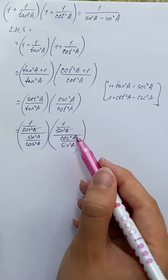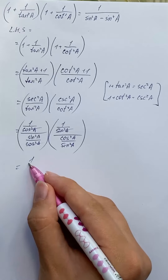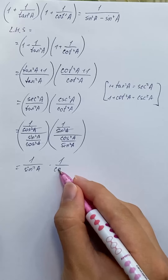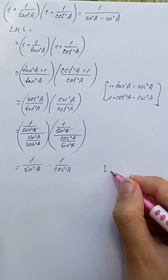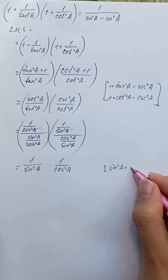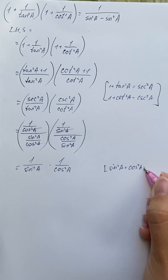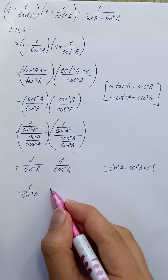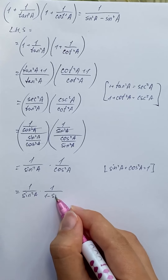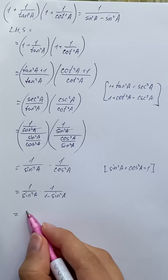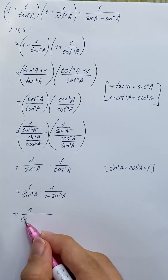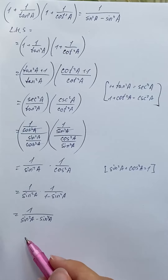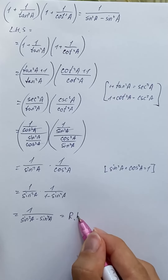We know the identity that sin²a + cos²a = 1, so we rewrite cos²a as 1 - sin²a, and we get 1/(sin²a(1 - sin²a)), which equals 1/(sin²a - sin⁴a). This matches the right-hand side, and the identity is proved.